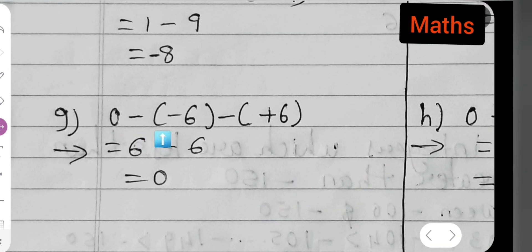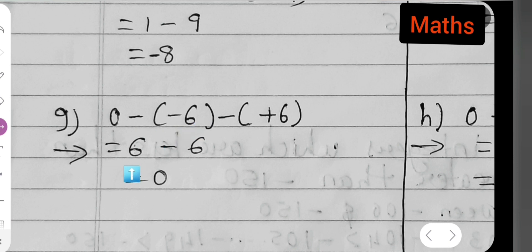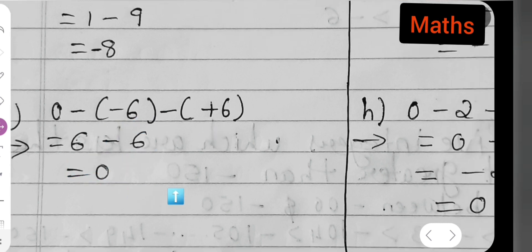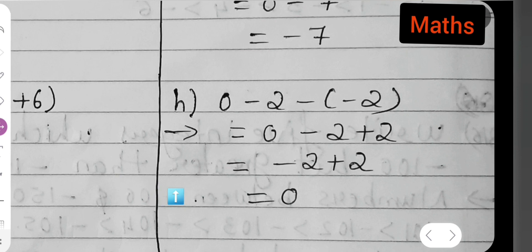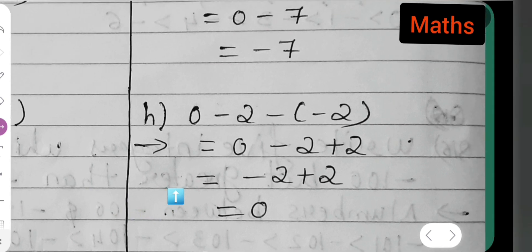Part (g): 0 minus (minus 6) minus (minus 6). Opening the brackets: minus into minus gives positive 6, and minus into minus gives positive 6. So we have positive 6 minus 6, which equals 0.